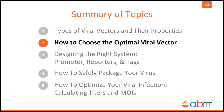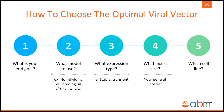Now we will move on to how to choose the optimal viral vector for your specific needs. There are a few important factors to think about, including your end goal. What are you trying to accomplish with obtaining a viral vector? Are you looking for high protein expression? If so, baculovirus would be your best option. Looking for stable integration of common cell lines? Lentiviral vectors would be sufficient. Stable expression of immune cell lines such as B cells or T cells? Retrovirus would be ideal.